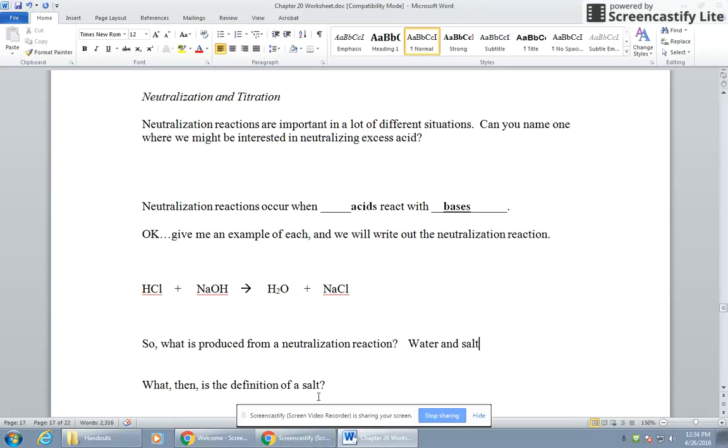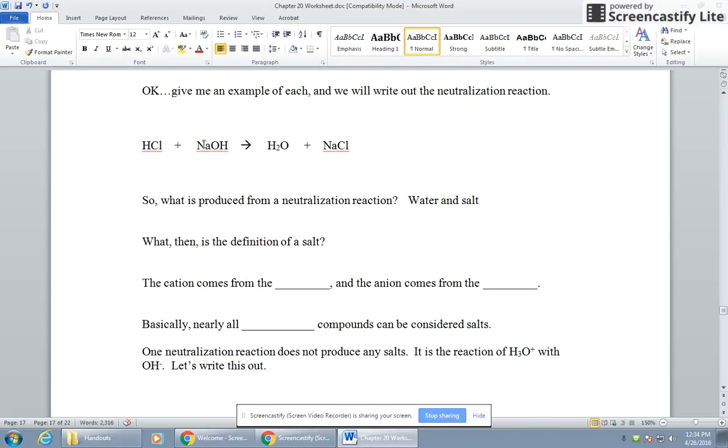Definition of a salt, then. If any reaction between an acid and a base makes water and a salt, doesn't have to be sodium chloride, what would you define a salt as? The cation comes from either the acid or the base. Take a look. Here's the cation, positively charged ion. Where does it come from? Look in the reactants. And then the anion comes from the other thing. From this, you'll find that almost all ionic compounds can be considered salts.